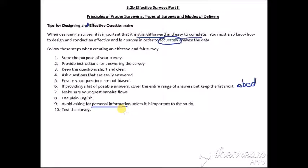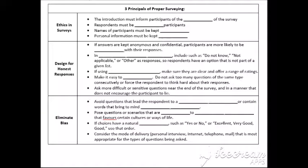Ensure your questions are not biased. If providing a list of possible answers, cover the entire range of answers but keep the list short. We usually say A, B, C, D. Make sure your questionnaire flows. Use plain English. Don't be too wordy. Avoid asking for personal information unless it's important to the study. So personal information is if you ask somebody's name and then like ID or something, that doesn't really, that's not important to the survey and people will be reluctant to answer.